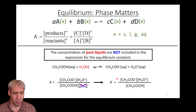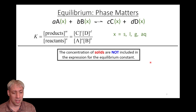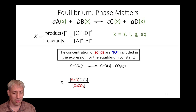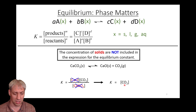Likewise, same thing with solids — we don't include solids in these equilibrium equations. If we have calcium carbonate going to calcium oxide plus CO2 — solid to solid plus gas — we remove the two solids from our equilibrium equation. Products over reactants to the stoichiometry, and we ultimately end up with an equation where the equilibrium constant is directly proportional to the concentration of CO2.